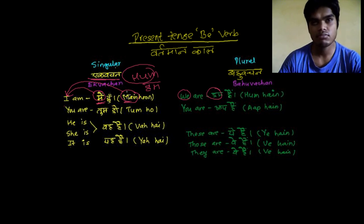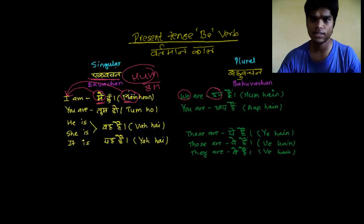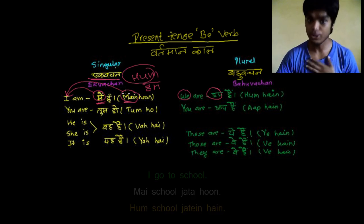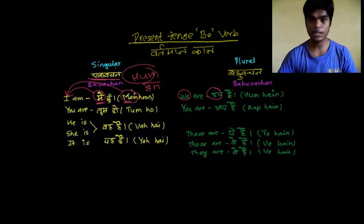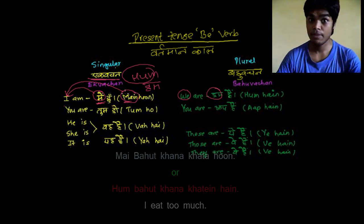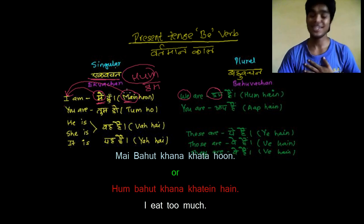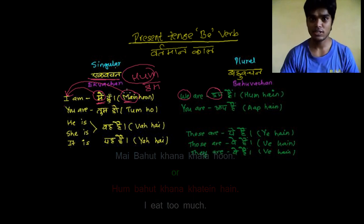Using 'hum' instead of 'I' gives a kind of greatness to your language. 'I' sometimes seems a little selfish. So you can use 'hum' everywhere — that's also good. For example, I'm alone here and I say 'main school jata hoon', meaning I go to school, but the same thing I can say as 'hum school jaate hain'. Similarly, 'main bahut khana khata hoon' means I eat too much, and the same can be said as 'hum bahut khana khaate hain'.